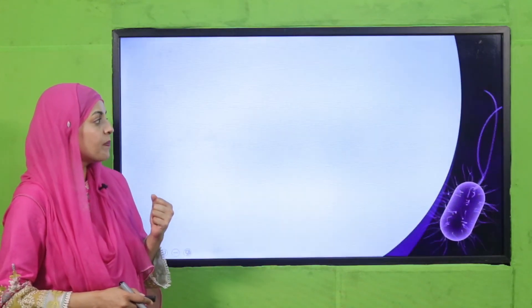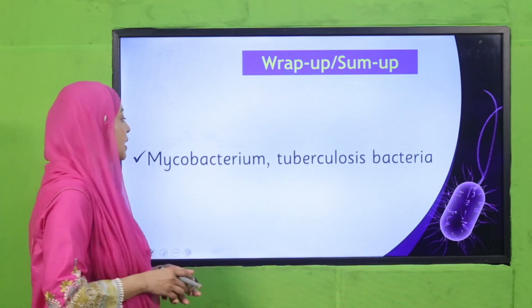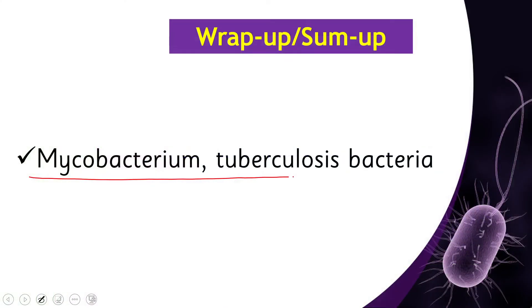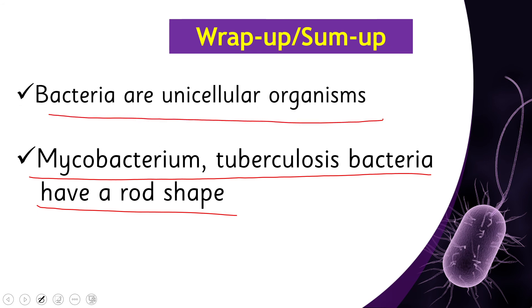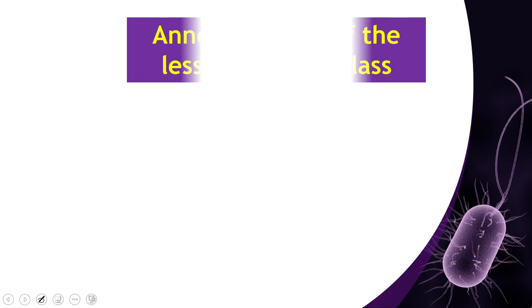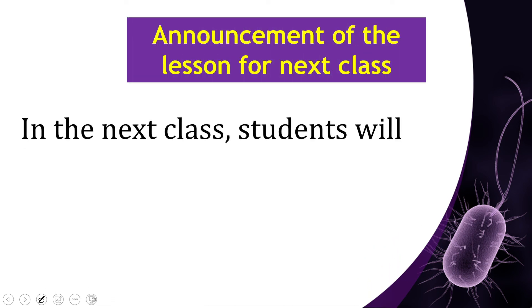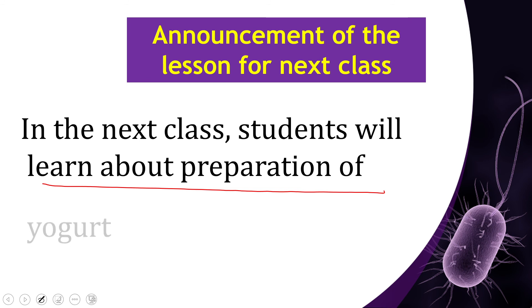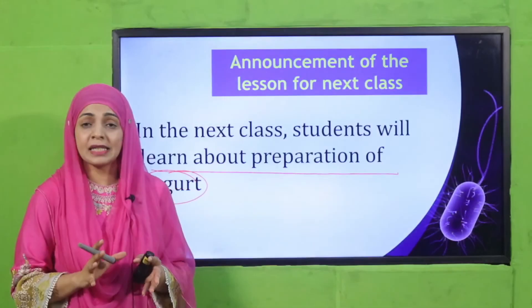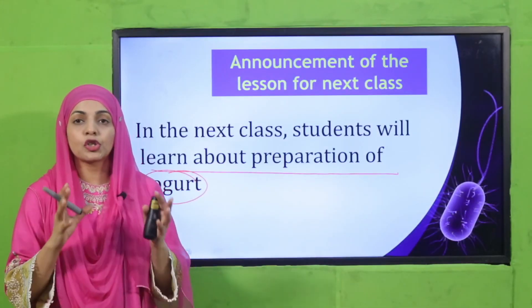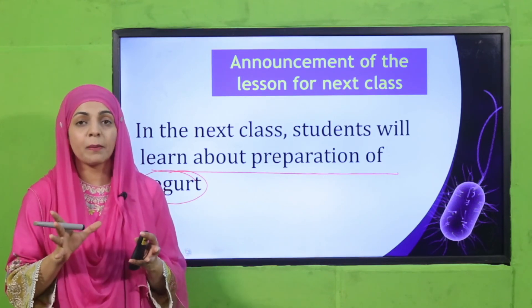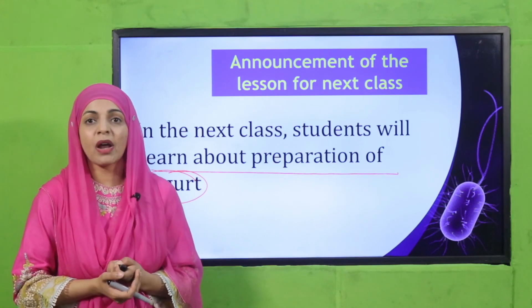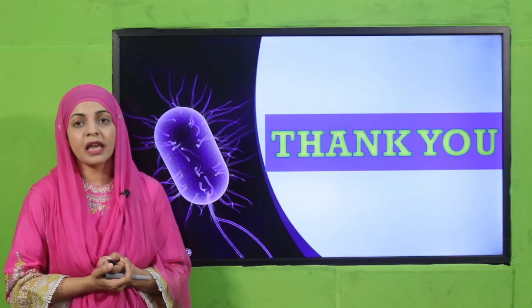Today we learned that bacteria are unicellular organisms, and Mycobacterium tuberculosis bacteria have a rod shape. In the next lecture, students will learn about the preparation of yogurt — we will perform an experiment. You will love this experiment! Keep everybody around you safe. Have a good day, thank you so much.